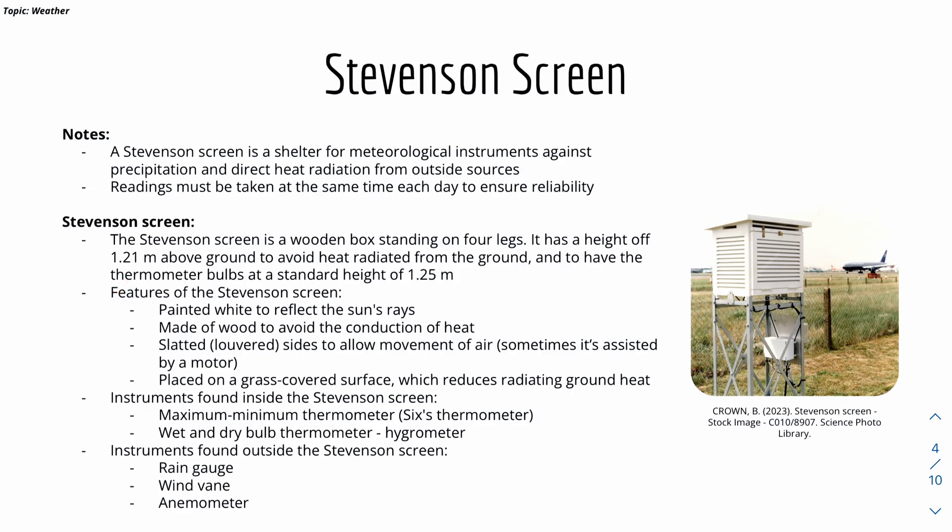Here are some more features. It's painted white to reflect the sun's rays, and it's made of wood to avoid the conduction of heat inside the box. It also has slatted sides to allow movement of air, and sometimes it's assisted by a motor if the air is not circulating really well inside and outside the box of the screen.